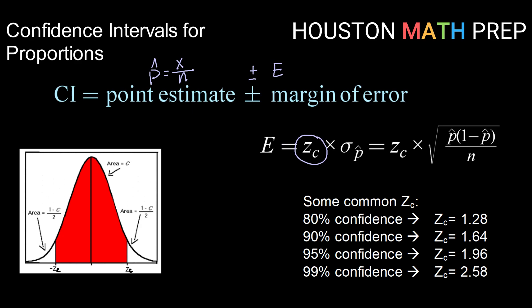For our z critical values, we use inverse normal. We take the area in the tail left over by putting our confidence level as the area in the middle. For example, for 70% confidence, that leaves 1 minus 0.7 in the tails, and taking that in half gives 0.15 in each tail. We feed the area to the left — 0.15 — with mean 0 and standard deviation 1 to get our critical value. It can be helpful to memorize a few of the common critical z-scores for usual levels of confidence, which I've listed here.